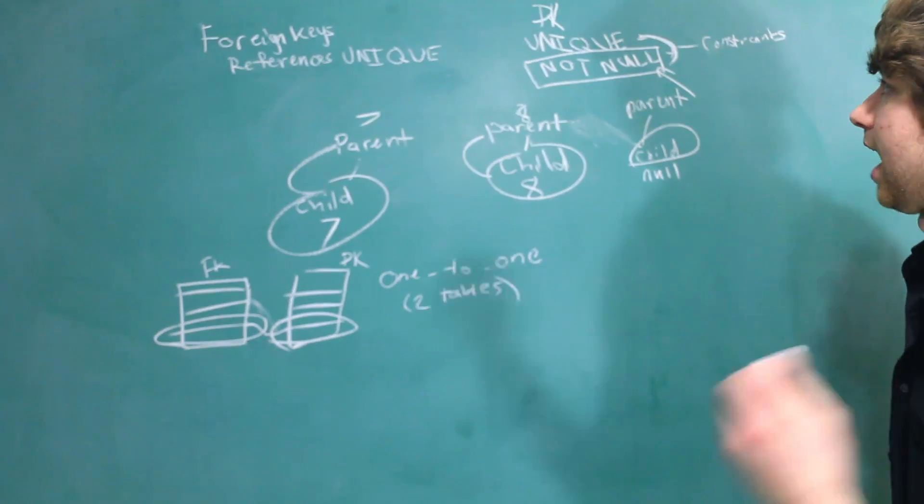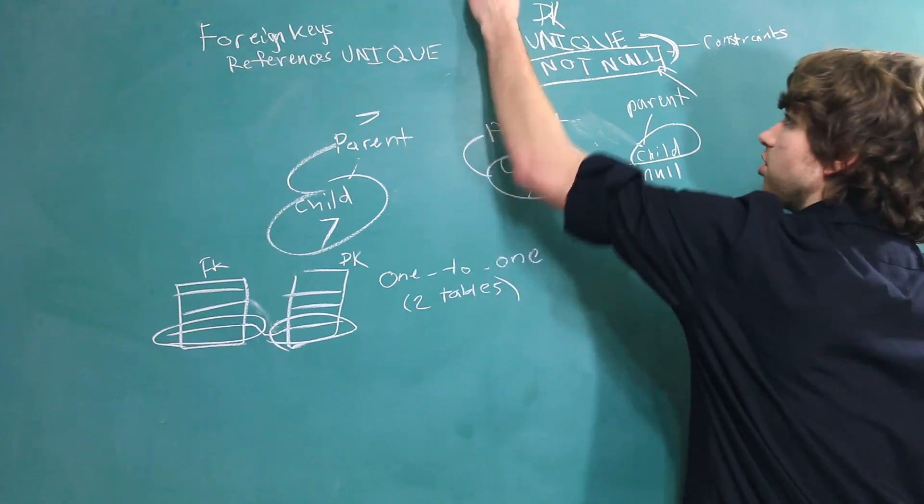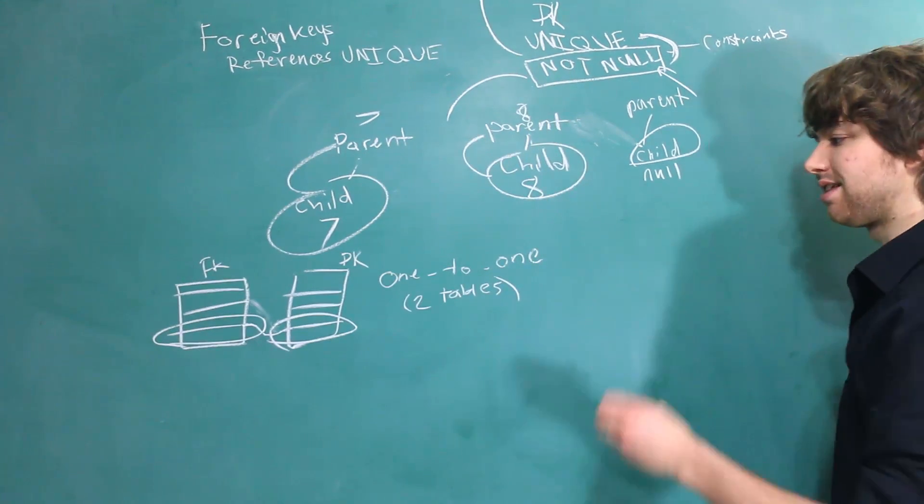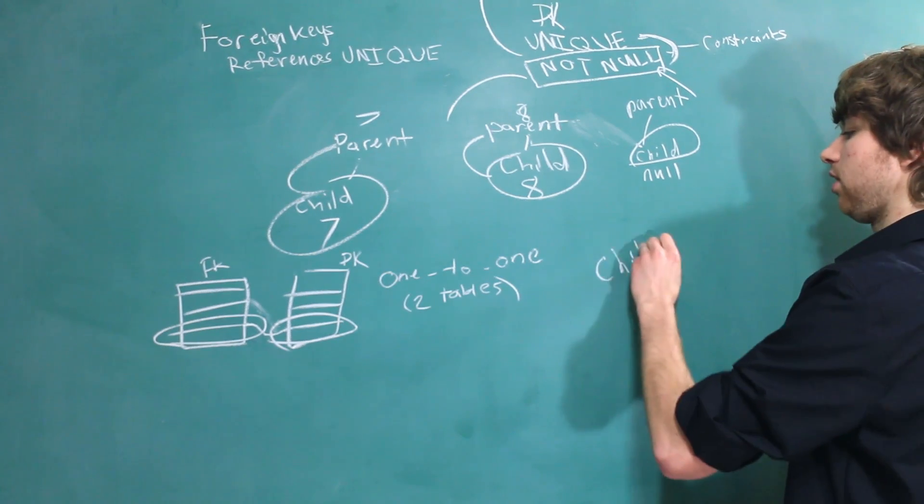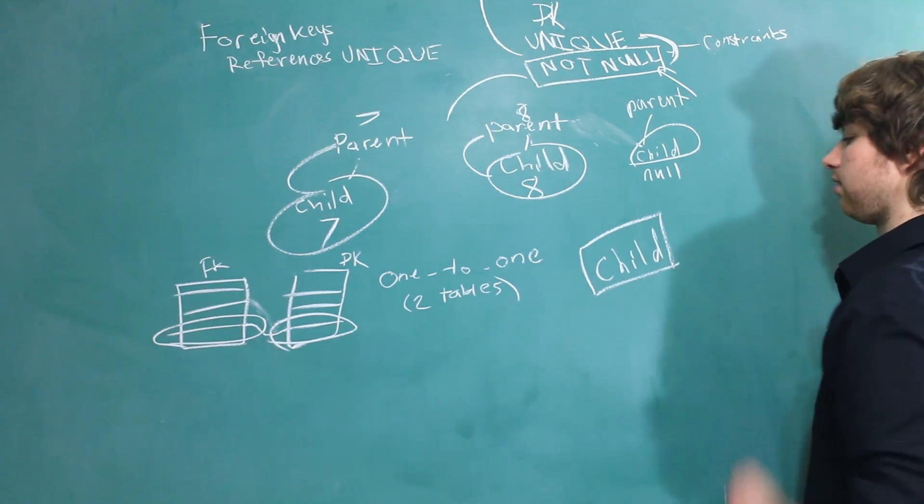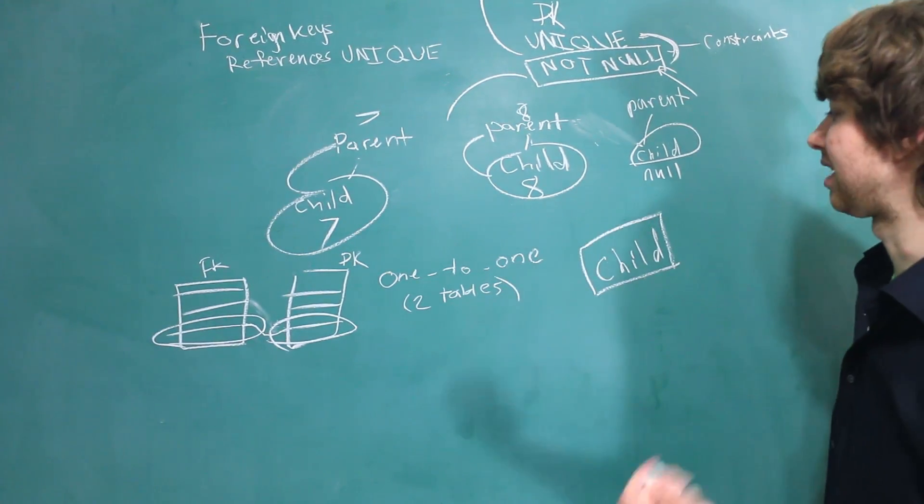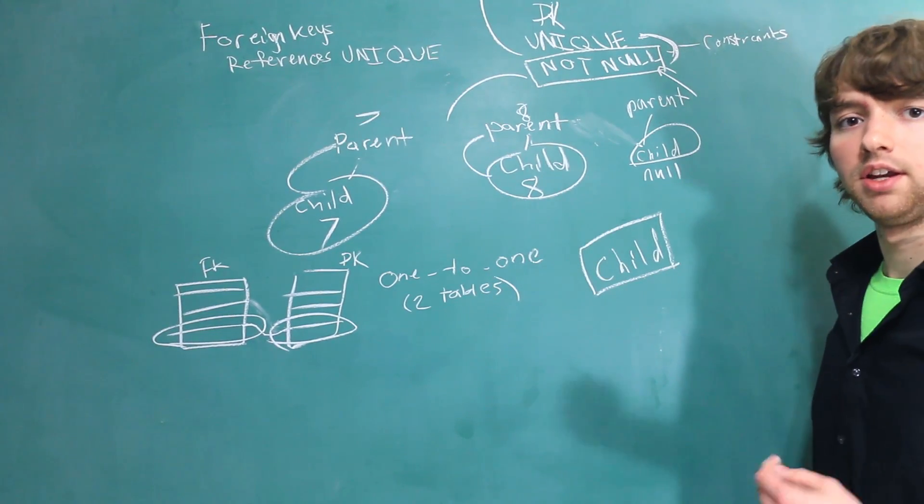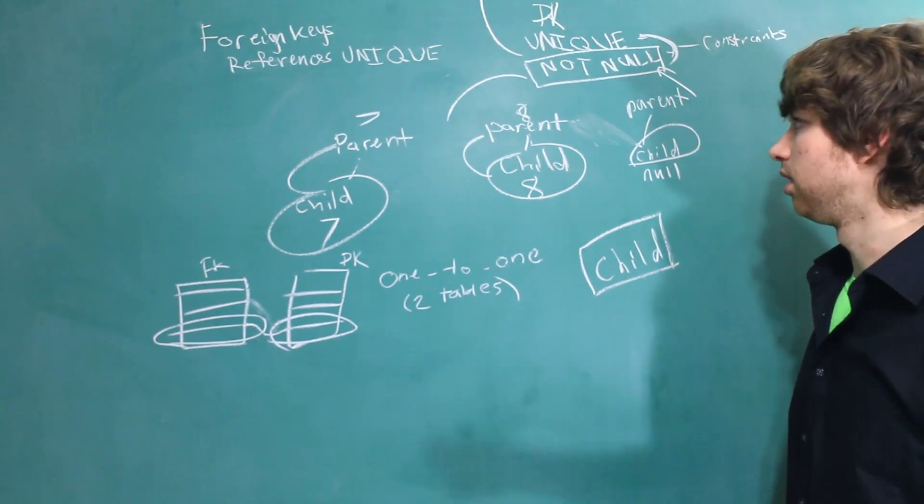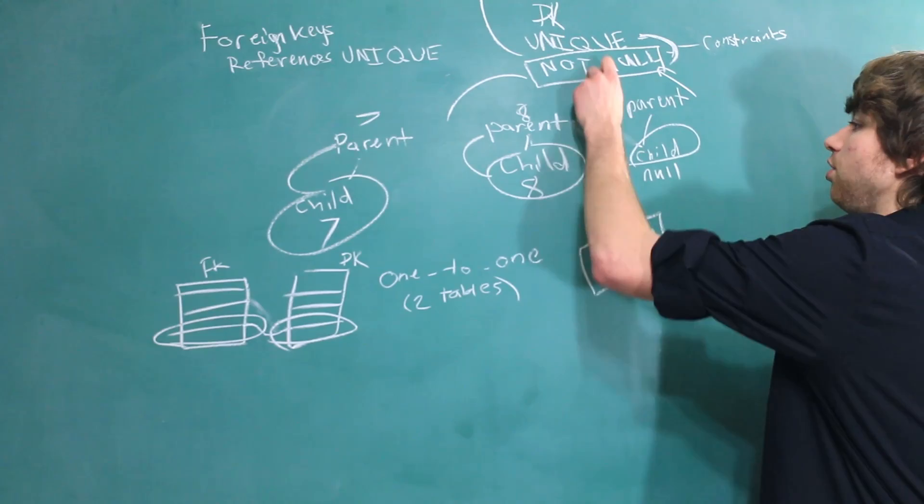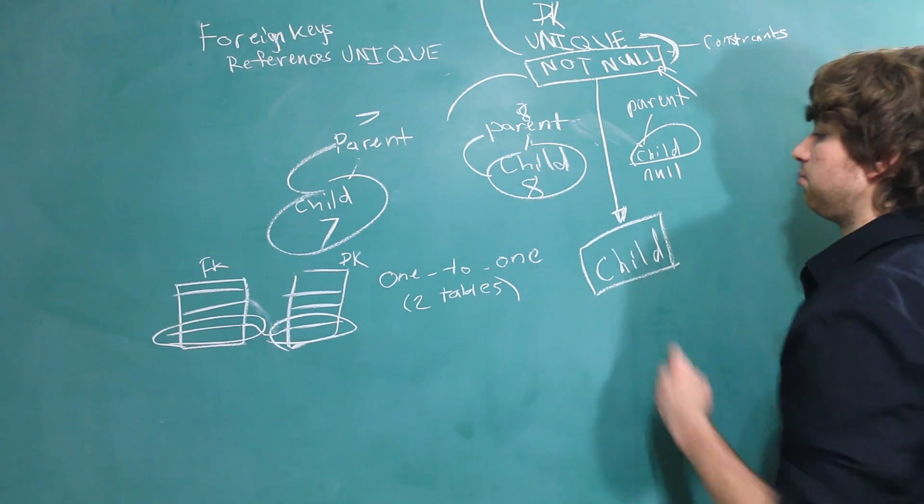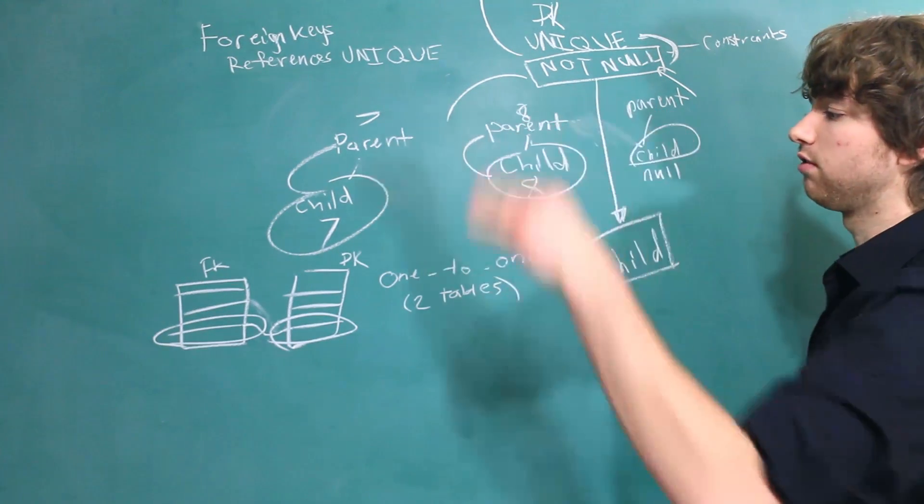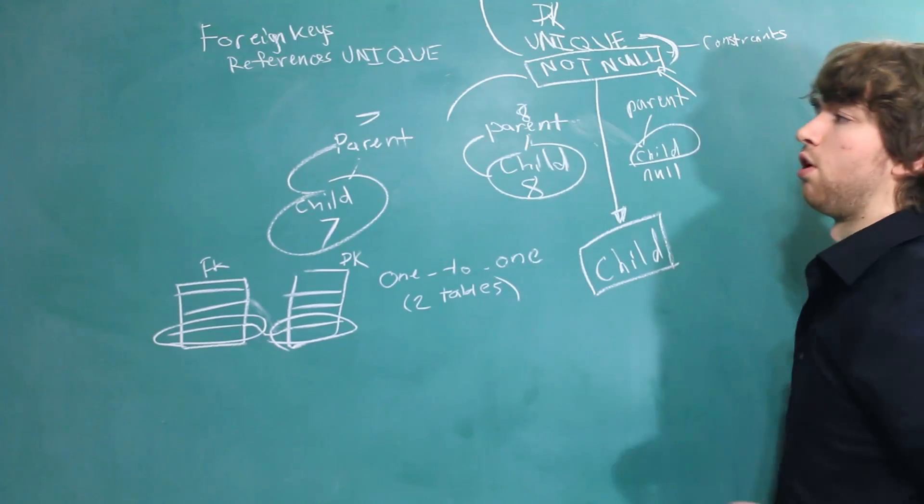So, whenever you have a foreign key, ask yourself the two questions. Should it be unique, and should it be not null? Would it make sense for the child to exist with no parent, just orphaned all by himself? Or, does it make sense that it has to have a parent? It really just depends on what you're working with. More often than not, not null is going to be applied, but not always. So, that's a rough overview of unique and not null for foreign keys. Hopefully, that was helpful.